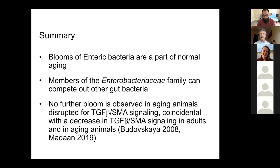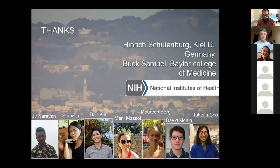We believe the normal expansion of Enterobacteriaceae in aging animals is at least partially due to the normal decrease in TGF-beta signaling that occurs during aging — something we are currently testing. I'd like to thank all the people who contributed to this project: JJ Narayan who labeled the Enterobacter species; Stacy, Dan, and Mariel currently analyzing the aging worm microbiome data; Maureen Berg who started this project around 2014; David and Jay Yoon who worked on TGF-beta colonization and tissue effects; and Henrik and Buck for their lovely collaboration. Thank you.